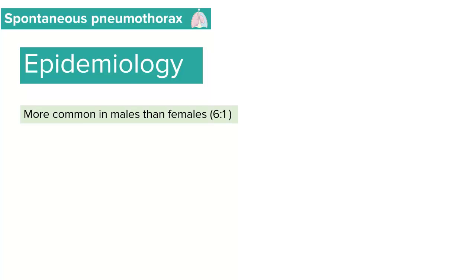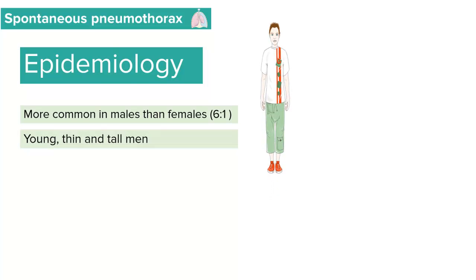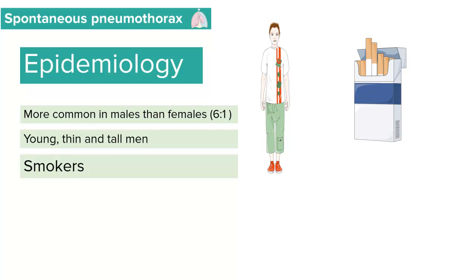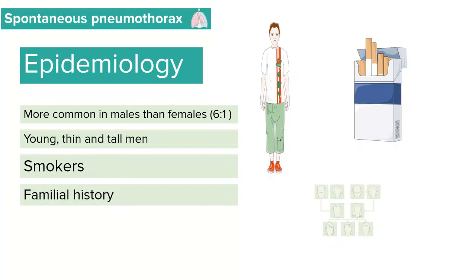Spontaneous pneumothorax is more common in males compared to females in a ratio of 6 to 1, and occurs more commonly in young, thin, and tall men. Smokers are also at higher risk of developing spontaneous pneumothorax. Some patients have a familial history of spontaneous pneumothorax, giving them a higher chance of developing it as well.